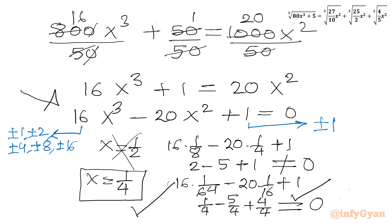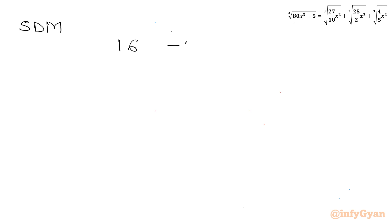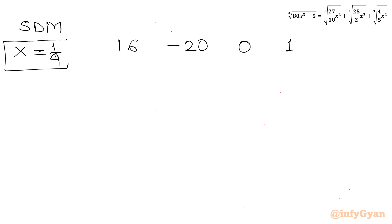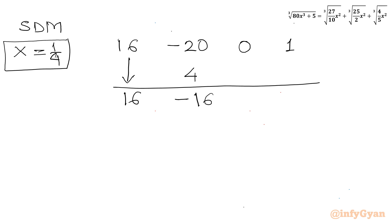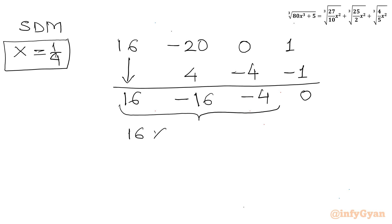Now for synthetic division, I write all the coefficients of the cubic equation: 16, −20, 0, 1, with our base solution x = 1/4. Leading coefficient 16 stays as is. 1/4 × 16 = 4; adding gives −16. 1/4 × (−16) = −4; adding gives −4. 1/4 × (−4) = −1; adding gives 0. So the resulting quadratic factor is 16x² − 16x − 4 = 0.